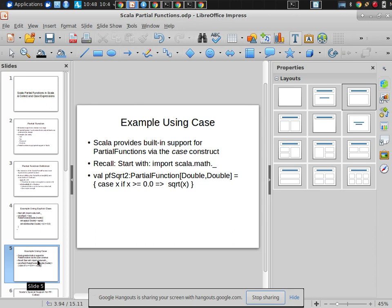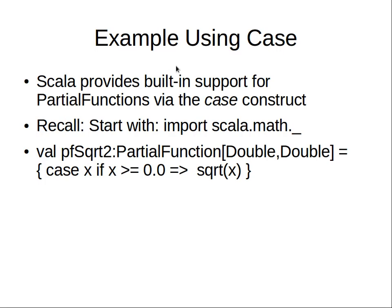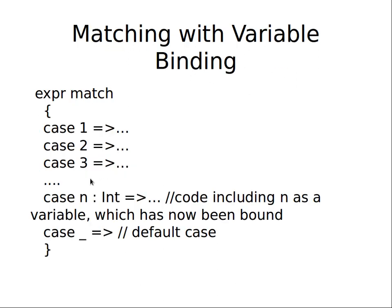There are easier ways to define partial functions. The main easy way is using the case construct. We've seen case before — we saw it in matching, where we were matching a set of possibilities. You can do expression match and handle different cases.